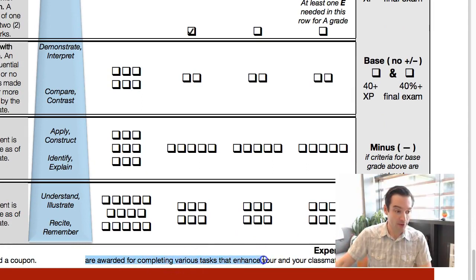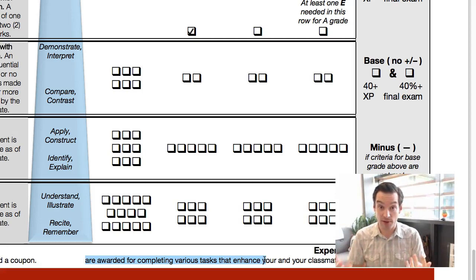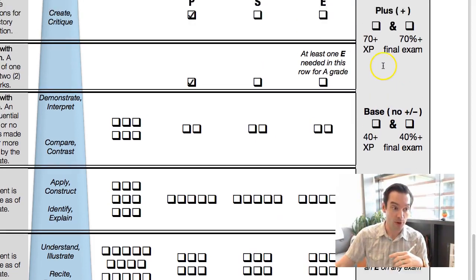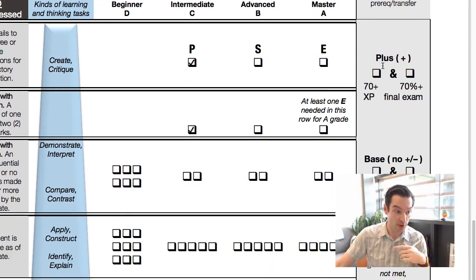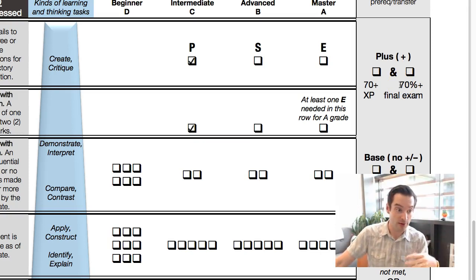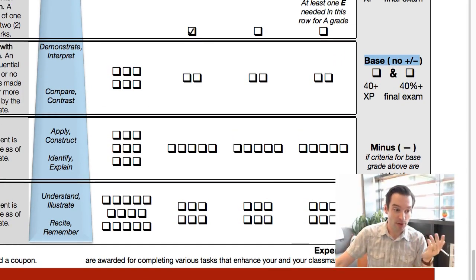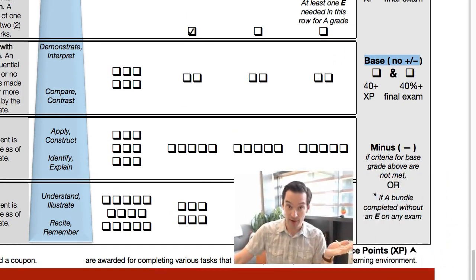The final exam is optional this semester — if you're happy with your grade when finals come along, you don't need to do it, but it's an opportunity to improve your grade. Earning 70% or more on the final exam plus 70 experience points gets you a plus on your grade. Earning 40 experience points and 40% on the final gets you the base grade without a modifier. Not meeting those criteria gives you a minus attached to your base grade.